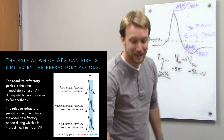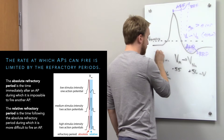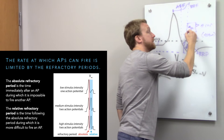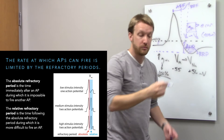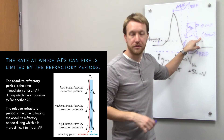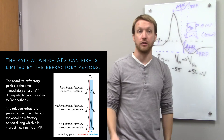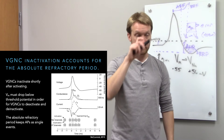Once de-inactivated, we exit the absolute refractory period and enter the relative refractory period, which corresponds to the after hyperpolarization. Here you can generate another action potential but it's more difficult: we're hyperpolarized and further from threshold, and elevated potassium conductance resists depolarization because moving away from potassium's reversal only increases its driving force. You can fire in the relative refractory period, but you need a very strong stimulus.